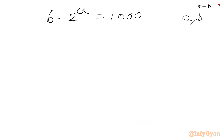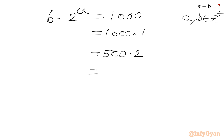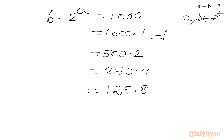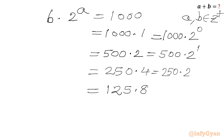Since a and b belong to positive integers, let us factor 1000 first. We can write: 1000 × 1, 500 × 2, 250 × 4, and 125 × 8. Rewriting these as b · 2^a: 1000 × 2^0, 500 × 2^1, 250 × 2^2, and 125 × 2^3. The power of 2 is our a and the coefficient is b.